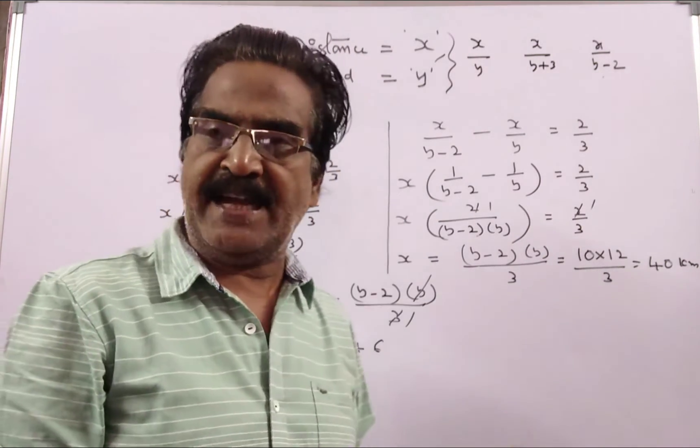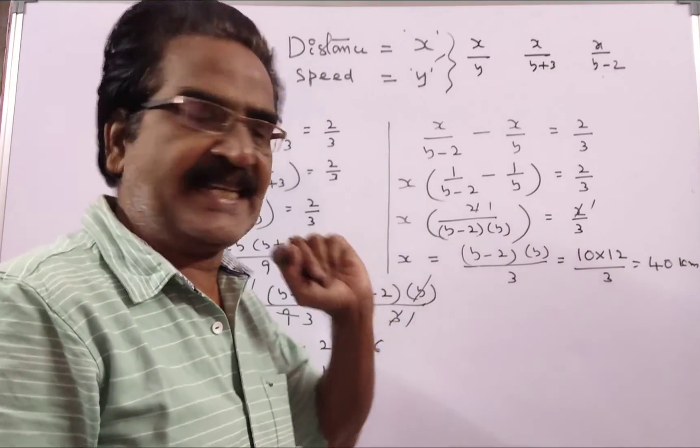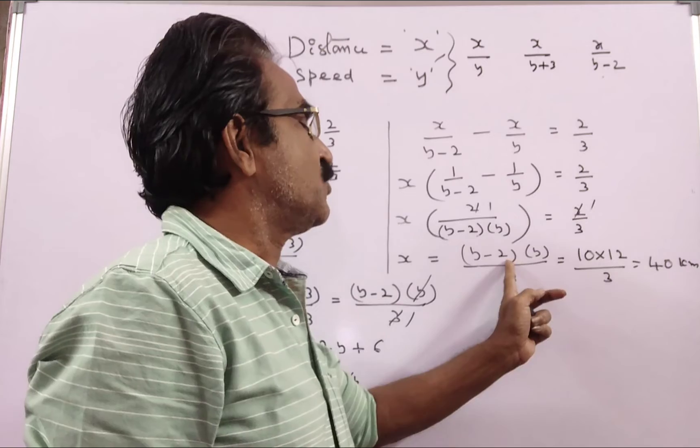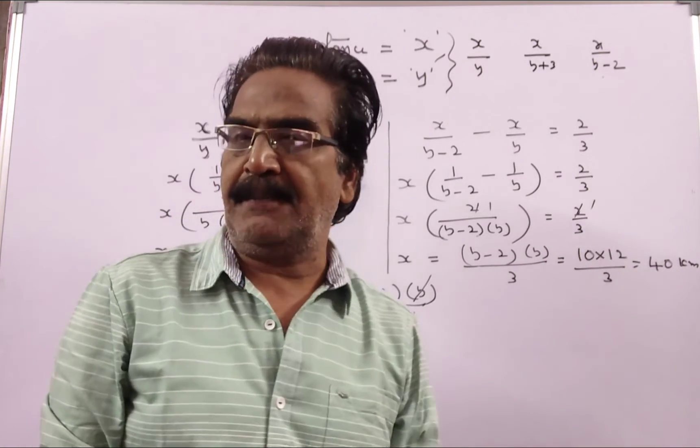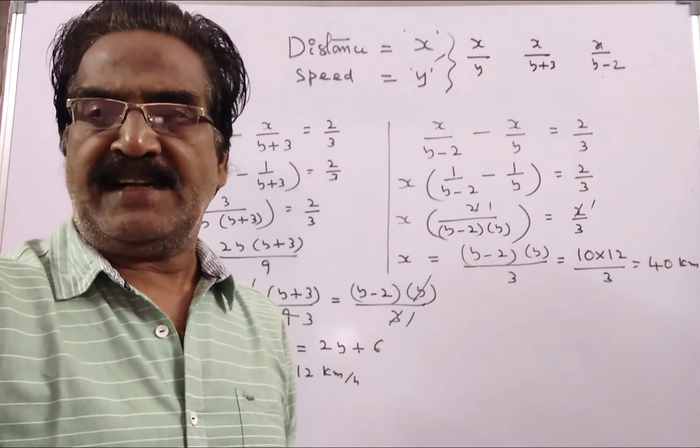Let us substitute this y value in this equation to get the distance x. See, y minus 2, 10 into 12 by 3, 120 by 3, that is equal to 40 km is the distance, friends.